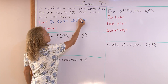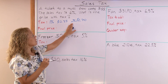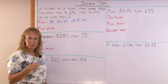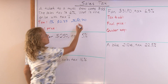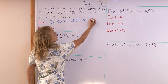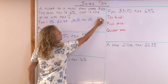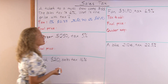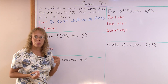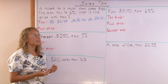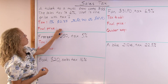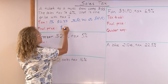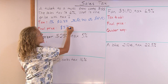And now from 2% to 6%, I will go times 3 on this number. So the 6% will be $2.10. That's the tax that we will need to add to the base price, and so the final price will be $37.10.